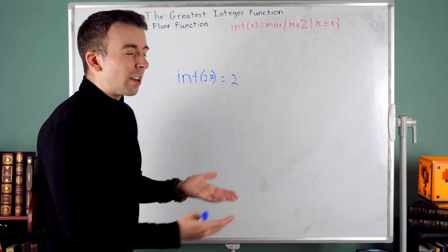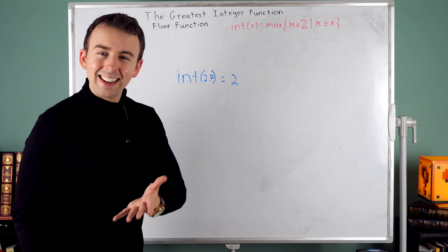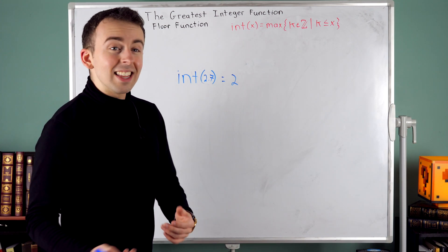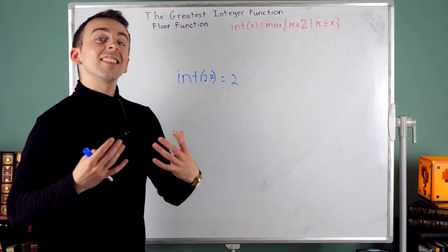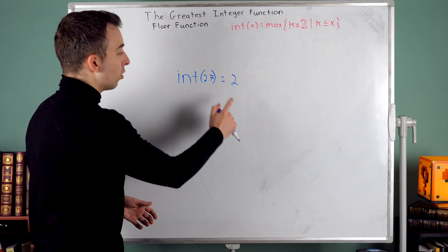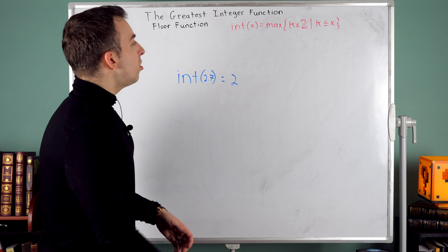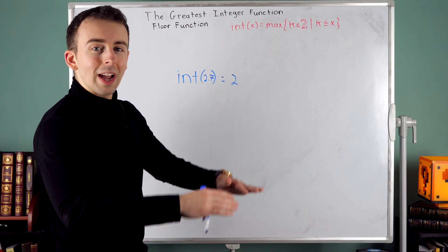That might seem a little weird because like here we round down. But what it's doing is giving us the greatest integer that's less than or equal to the input, which is why it's sometimes called the floor function as well.